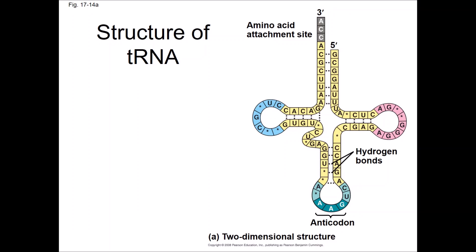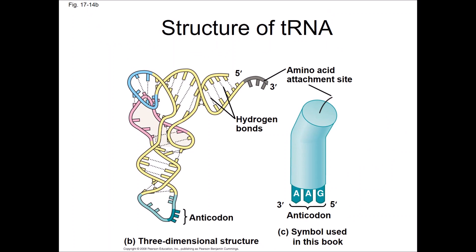This reflects the fact that the anticodon will be anti-parallel to the mRNA codon. The fully folded structure of a tRNA looks a bit like an upside down letter L, and the way it is represented in your textbook reflects this. We focus mostly on the anticodon and amino acid attachment site.